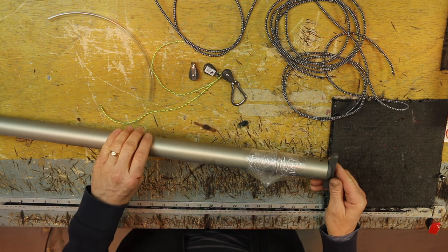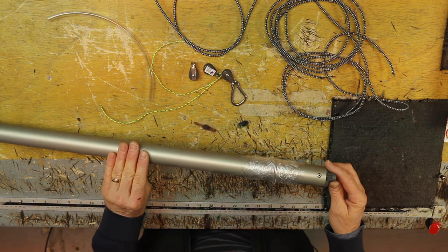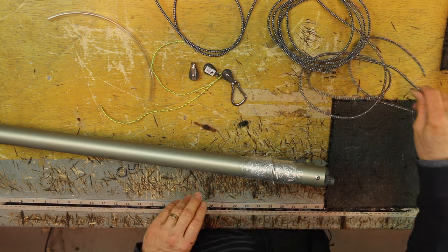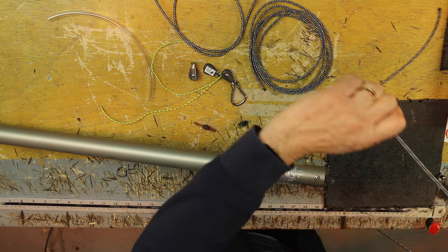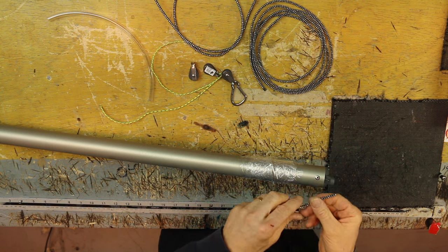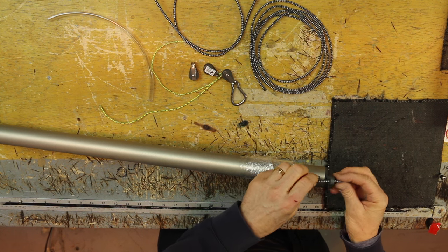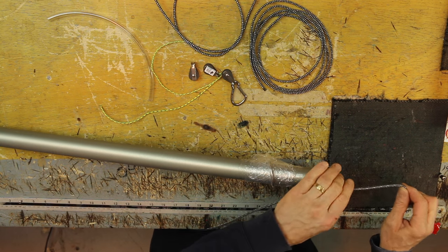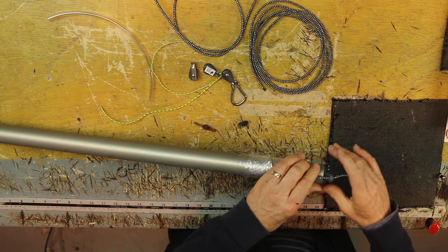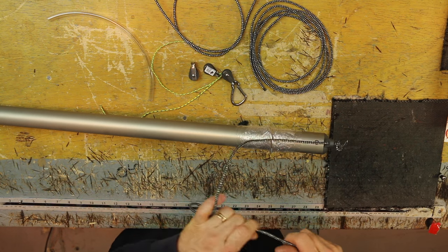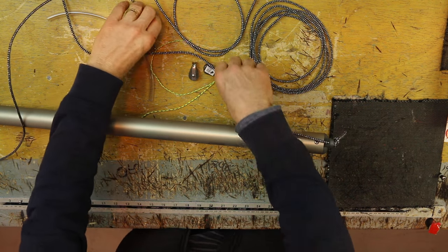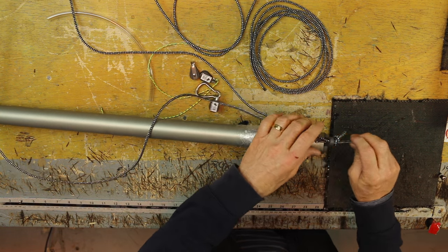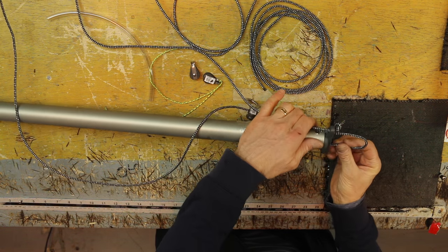Okay, so top of the boom, take one of your control lines. You can start off with the knot at this end. So this is your control line that's going to go through your asymmetric carbine hook.